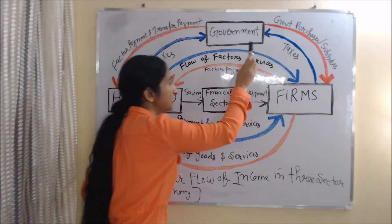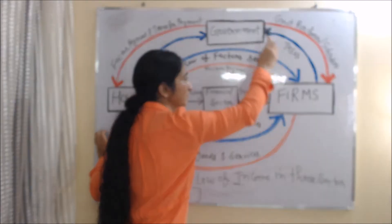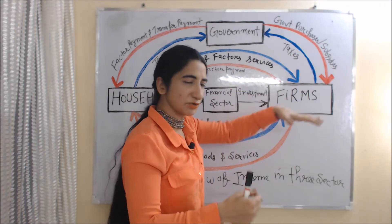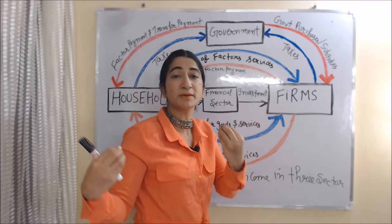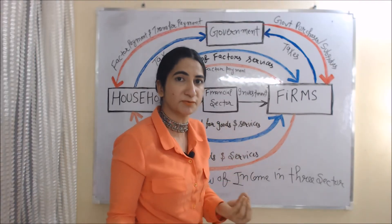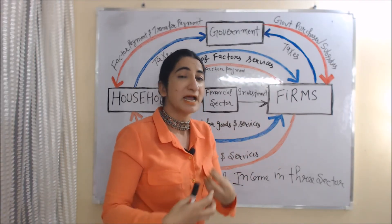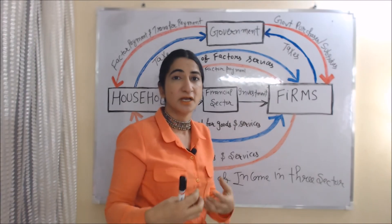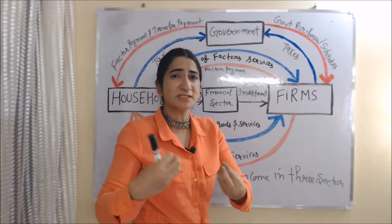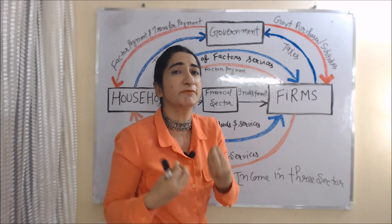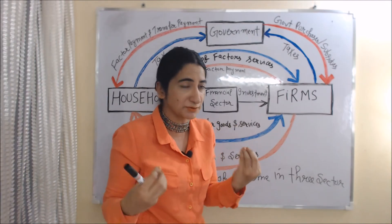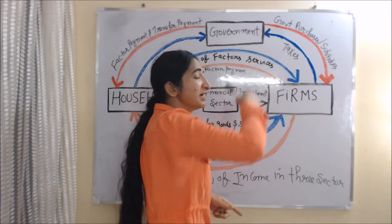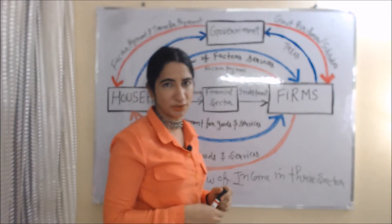Now we see the relationship between government and firms. Sometimes government purchases goods and services from firms. Sometimes government gives subsidies — meaning financial help — to firms. In return, firms pay taxes to the government.